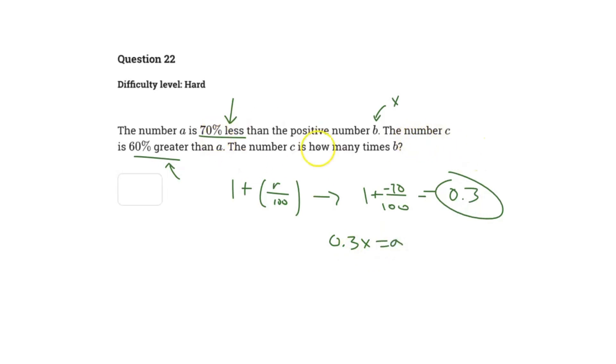The next part says the number C is 60% greater than A. We're going to use the same percent multiplier equation: 1 plus R. Our R value is a 60% positive increase, so 60 over 100. We know our percent multiplier is 1.6.